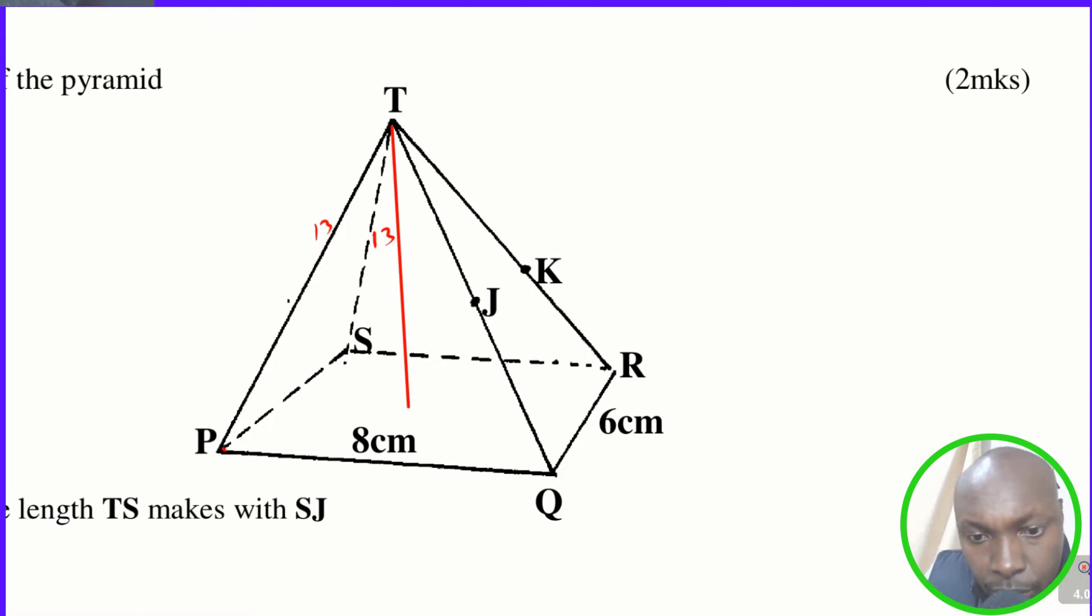we can draw another diagonal running from P all the way to R. So what you need to get is this, you can call this point O and this one will meet the diagonal at right angle.